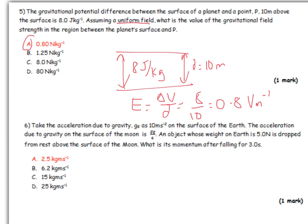Take the acceleration due to gravity, g_E, as 10 meters per second squared on the surface of Earth. The acceleration on the moon is g_E over 6. An object whose weight on Earth is 5 newtons is dropped from the surface of the moon. What is its momentum after 3 seconds? There's a lot going on here. First of all, we need to find a way of calculating the velocity after 3 seconds, and then we can turn that into momentum.